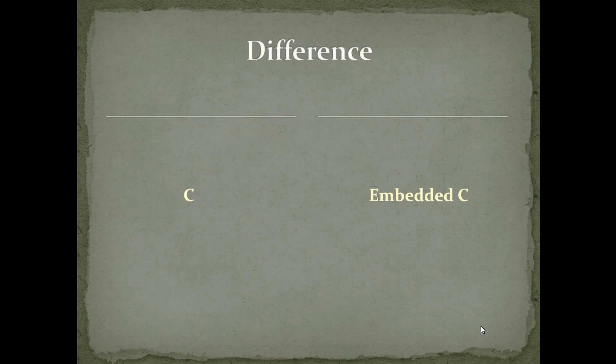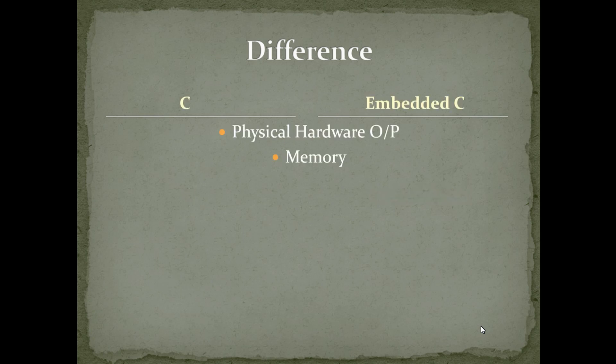First of all, let's differentiate C language with embedded C. The major difference is that in C language the outputs can be visualized only on your computer monitor, whereas in embedded C we can visualize physically the hardware as well as the output from your program. Also in C language, all the memory available in the hard disk and the RAM of the PC can be used for your program.